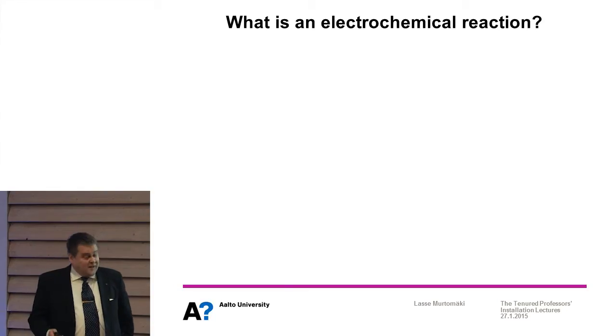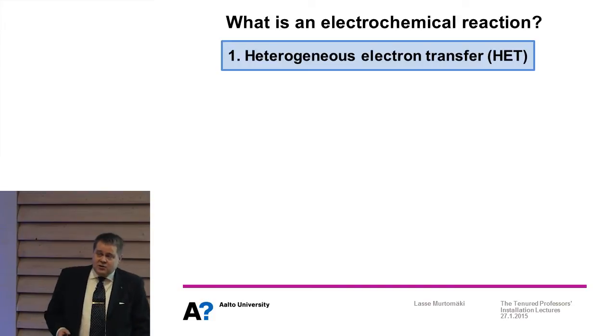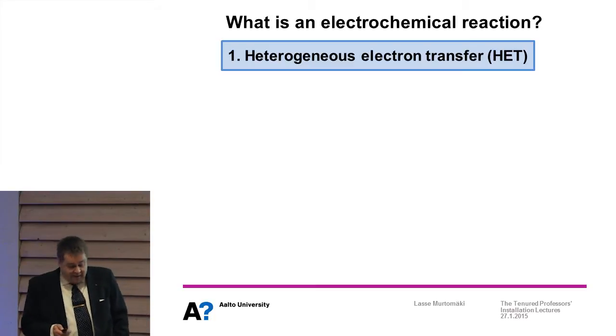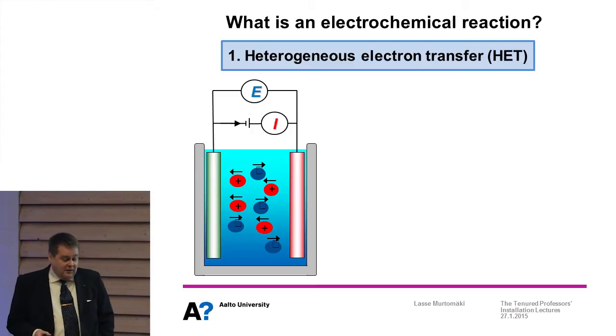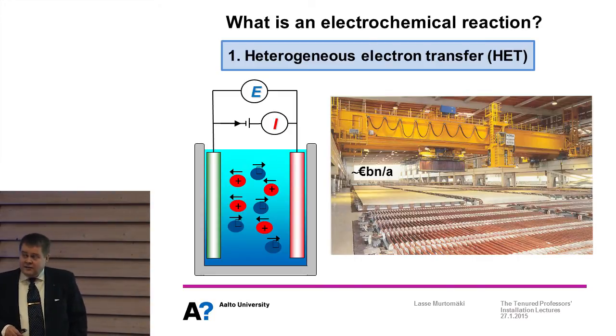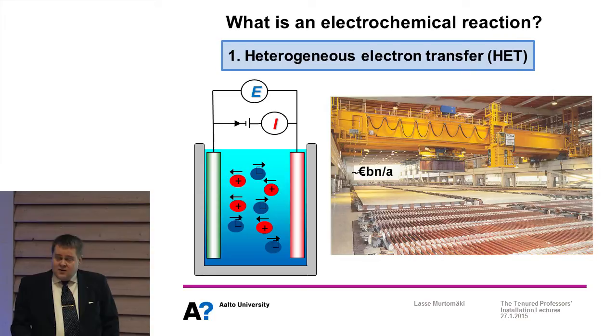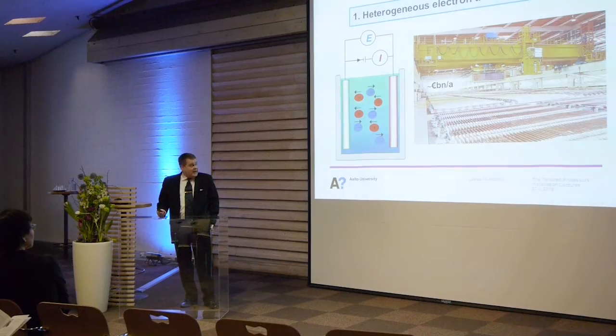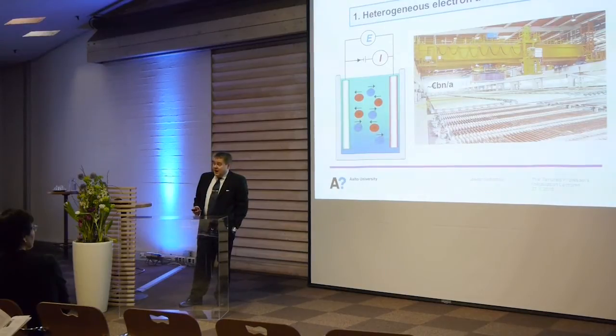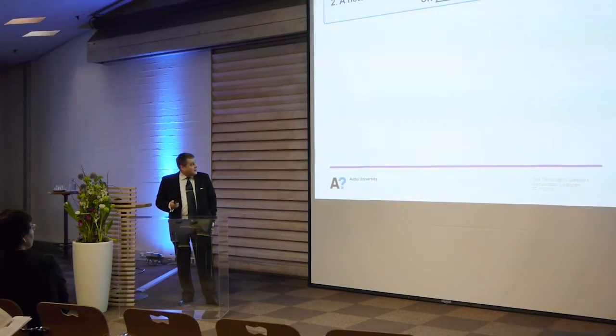We start with conventional electrochemistry. What is an electrochemical reaction? We know it is a heterogeneous electron transfer, meaning that electron is transferred between two phases, physical phases. Typically we have an electrochemical cell with electrolyte solution and electrodes, connected to an external power source to measure current and voltage. This is done in large scale in Finland - this picture of copper electrolysis in Pori. We also have electrolysis of zinc in Kokkola and nickel in Harjavalta, altogether more than one billion annual value, so it's a big business.